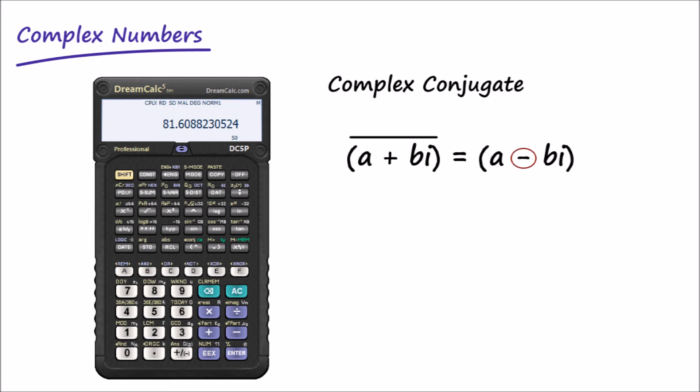And whenever we multiply a complex value by its conjugate, as shown, the result is always a real variable number. Let's demonstrate.